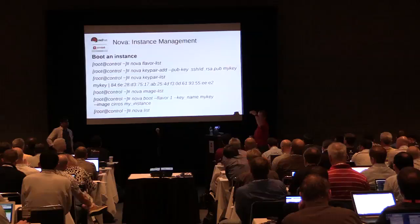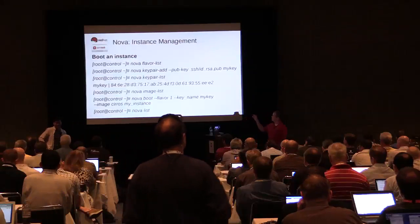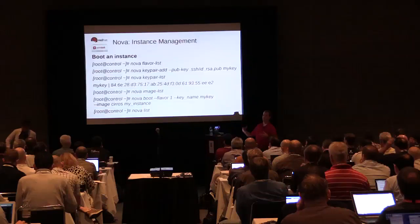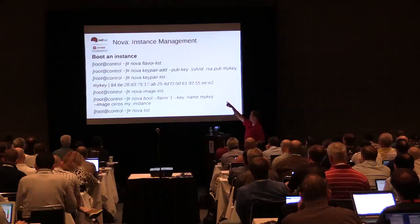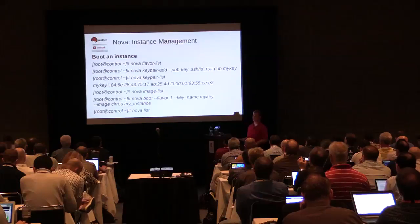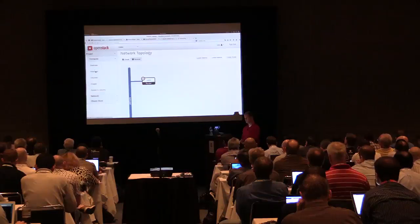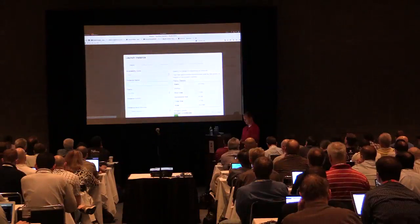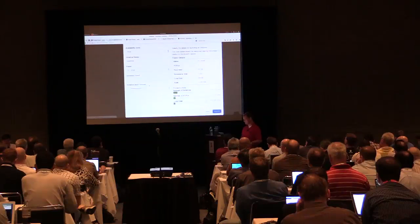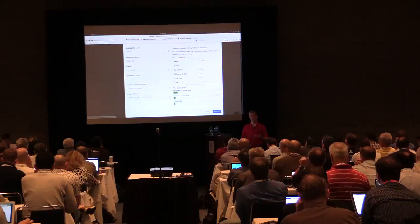Let's keep moving. Using Nova at the command line, you can list flavors, add key pairs, list instances with 'nova list,' list Glance images through Nova, and boot instances. Let's do this in the web interface — select Compute, go to Instances, click Launch Instance. I'll name it 'super test.' I'm going to boot from an image as my source and select that Fedora image I just imported.